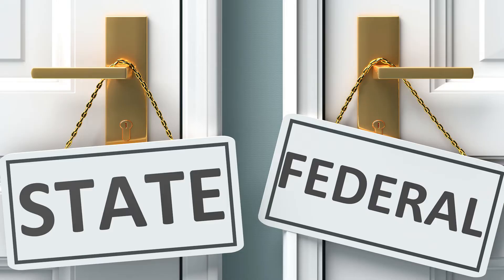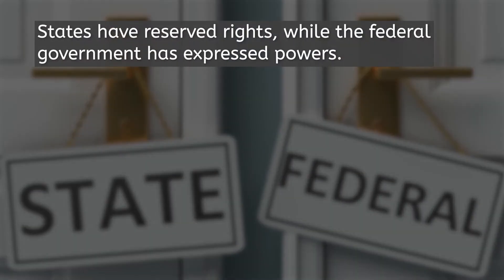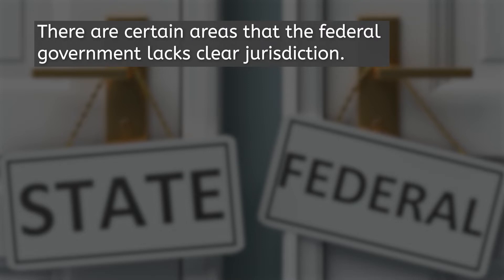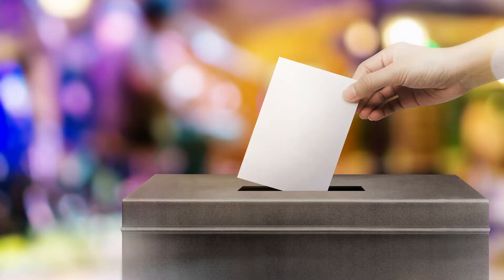Remember from Unit 3 that America is the land of many governments? Federalism creates a tension between state and federal government over the role each plays in American life. States have reserved rights while the federal government has expressed powers. At times they overlap, and these are called concurrent powers. This means there are certain areas that the federal government lacks clear jurisdiction — areas such as education, voting, and marriage are typically void of or difficult for federal involvement.